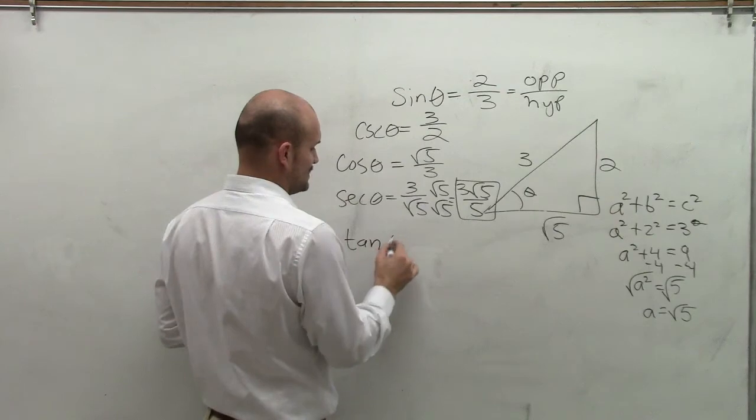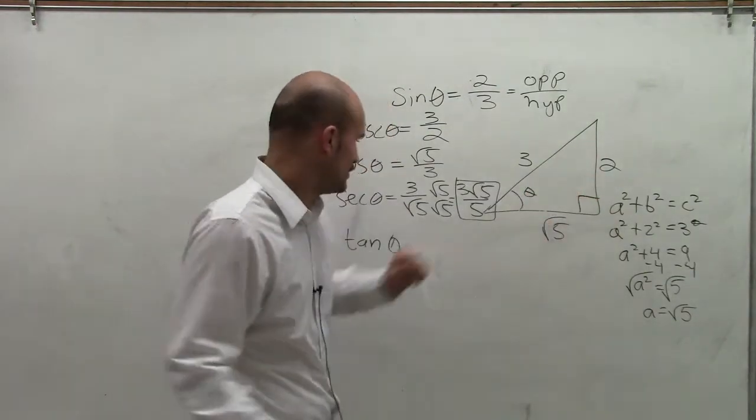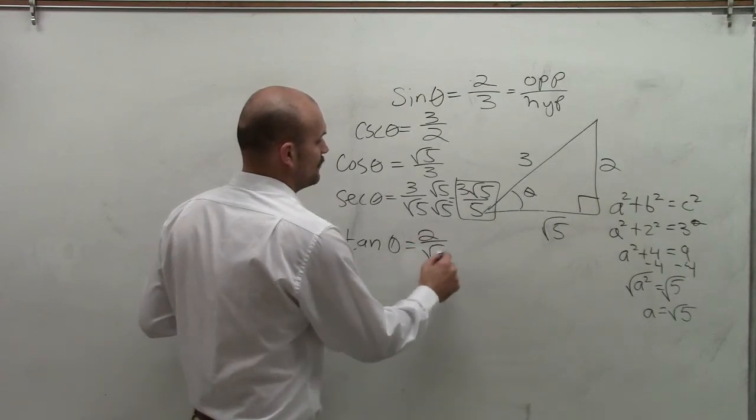Therefore, now let's go on to tangent. The ratio for tangent is opposite over adjacent. So that's going to be 2 over radical 5.